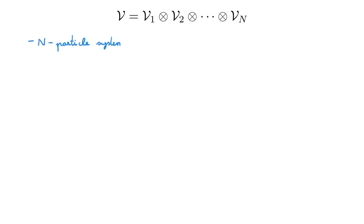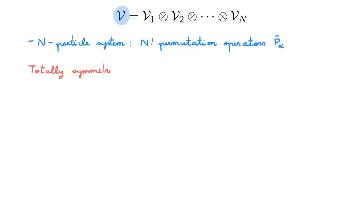Let's consider an N-particle system and the state space V made of the tensor products over N single-particle state spaces. Let's also consider the N-factorial permutation operators P-alpha associated with N particles. We first define a totally symmetric state, psi-plus. If P-alpha acting on psi-plus gives psi-plus for any alpha, then this state is a totally symmetric state. Conceptually, this means that applying any permutation of the N particles gives back the same state we started with.